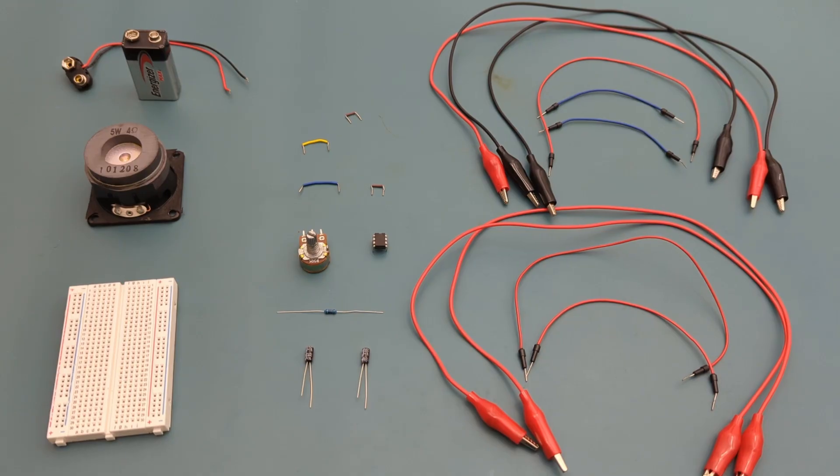Here are all the components you need to set up this circuit. 5 alligator clips, 9 jumper wires, 1 potentiometer, 1 555 timer IC, a 1000 ohm resistor, 2 22 microfarad capacitors, a 9-volt battery buckle connector, a 9-volt battery, one 5-watt speaker, and a breadboard to connect everything together.